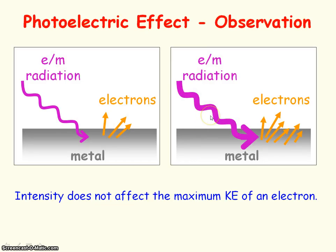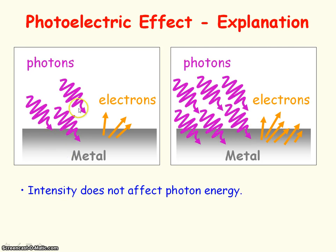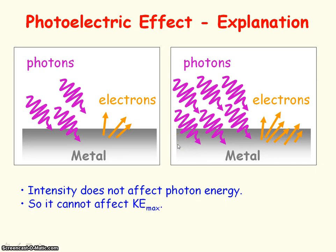However, increasing the intensity of electromagnetic radiation has no effect on the maximum kinetic energy of the electron. That's because intensity does not affect the photon energy — intensity affects the number of photons arriving, but not how much energy is carried by each photon. The energy of each photon is given by hf, so it's the frequency of the electromagnetic radiation that affects photon energy, not intensity.